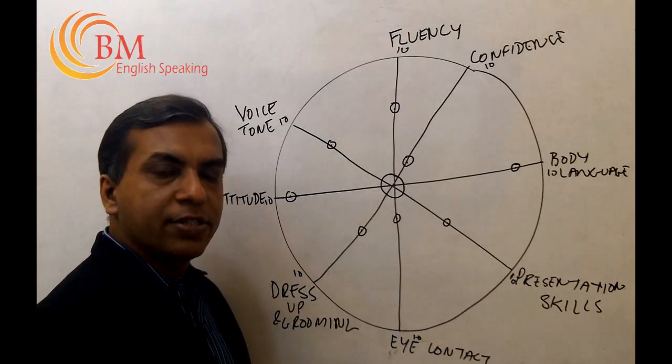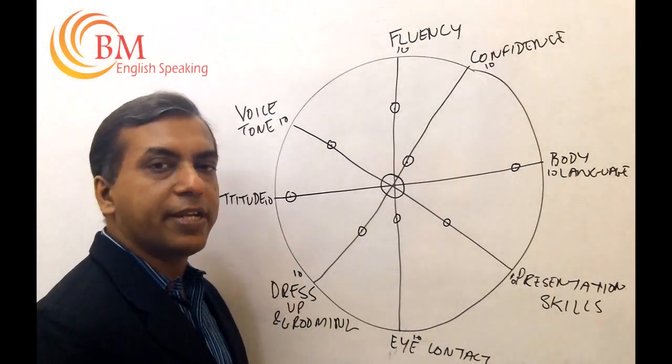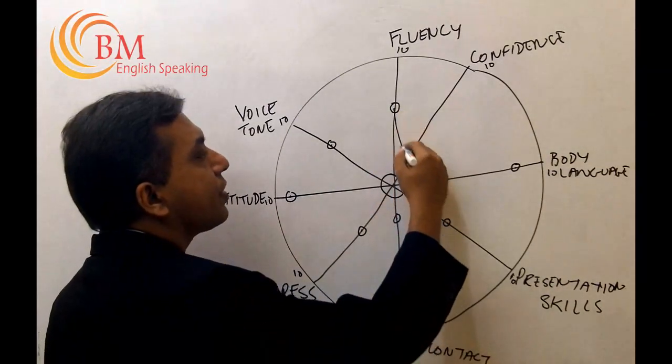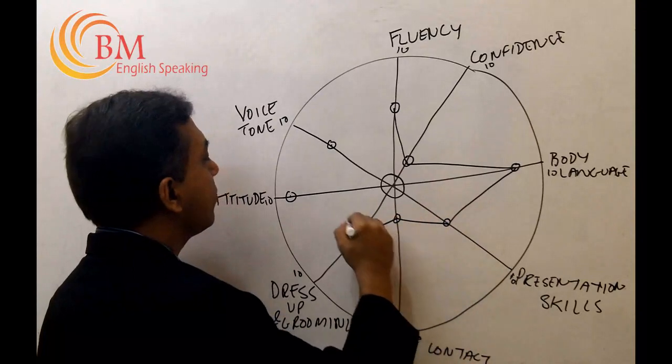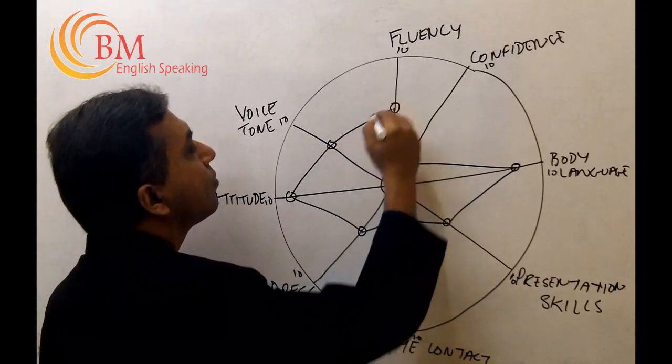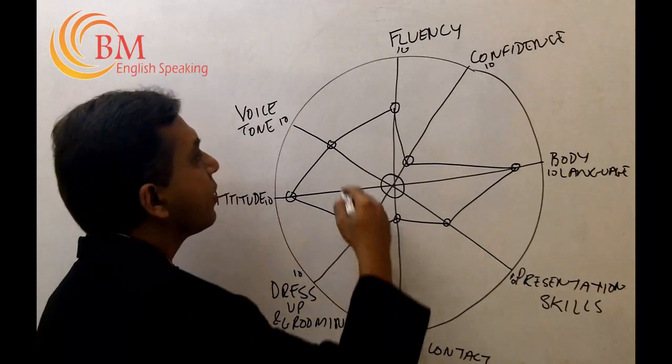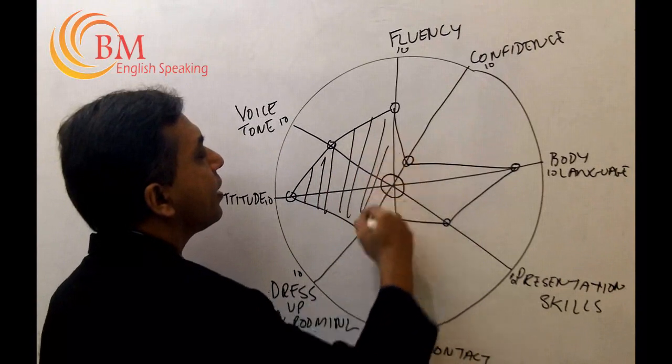Once you've marked these eight points and evaluated these eight elements of personality, connect all the eight dots with straight lines like this. Once you've connected all the eight dots, shade the area that is formed.